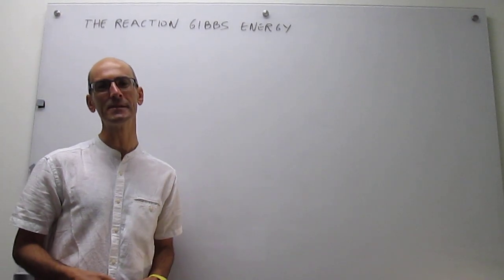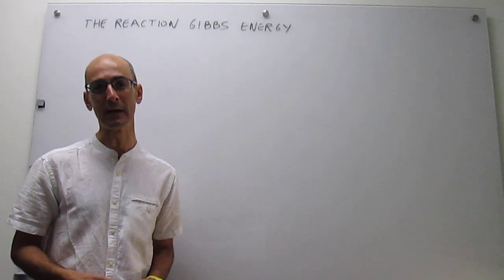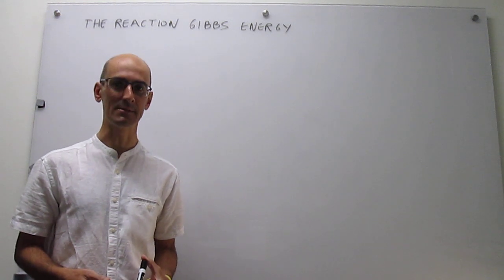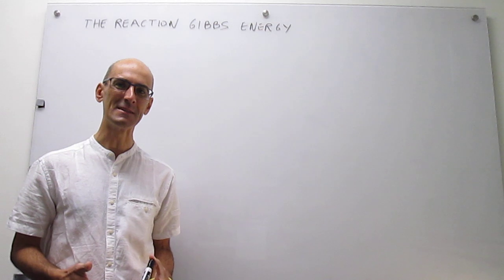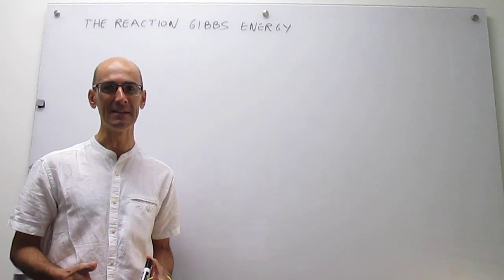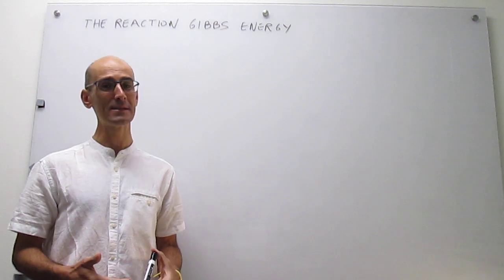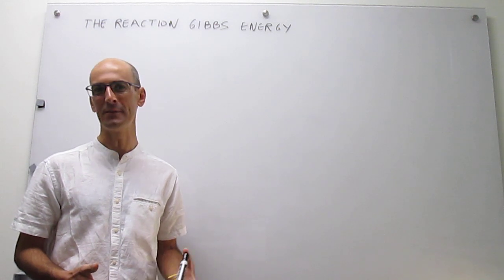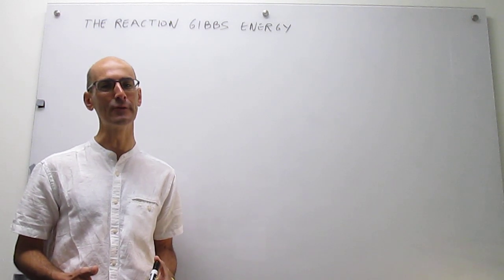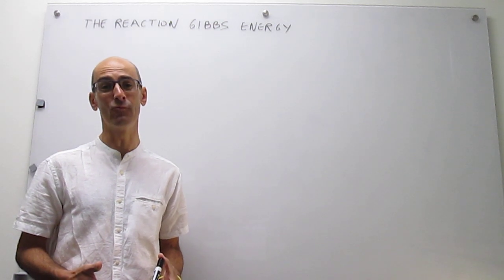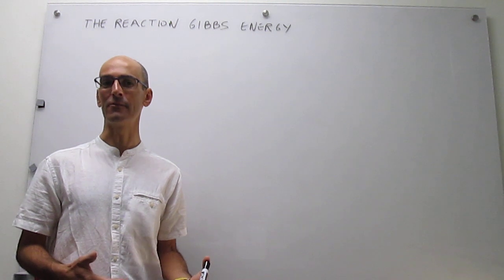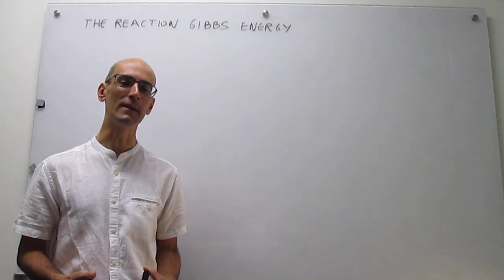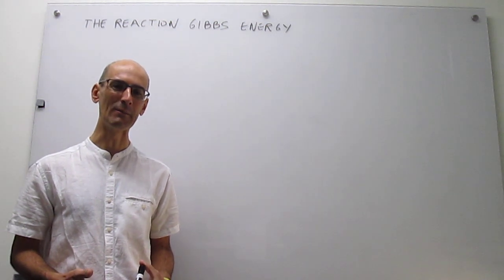With this video we begin a series on the concept of chemical equilibrium. In this particular video we're going to define the concept of the reaction Gibbs energy. Chemical equilibrium is a concept of utmost importance in the chemical curriculum — it controls a variety of processes such as the pH of solutions, solubility products, and so forth. One can argue that every single chemical reaction reaches a chemical equilibrium if you let it go long enough.